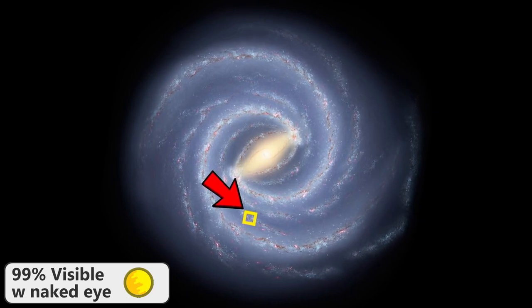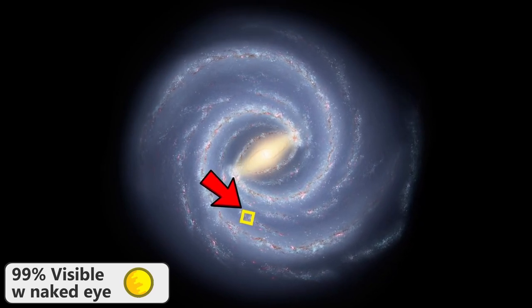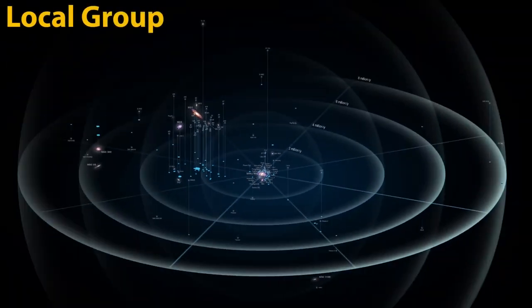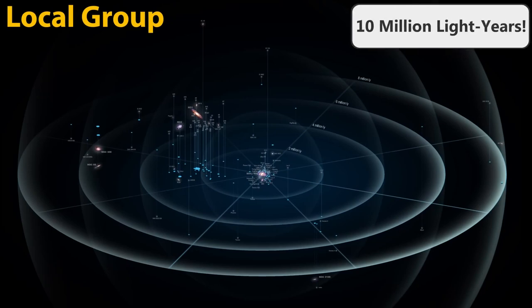But even this massive galaxy is nothing compared to the rest of what's out there. Zooming out even further and we arrive at the local group of galaxies, a collection of 54 different galaxies that is about 10 million light years across.